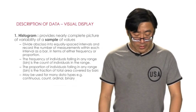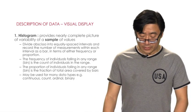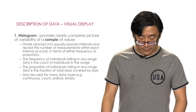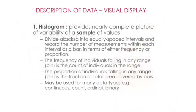Now we will talk about the description of data, starting with visual display. First, we want to talk about the histogram. A histogram provides a nearly complete picture of the variables of a sample of values. It divides the x-axis into equally spaced intervals and records the number of measurements within each interval as a bar, in terms of either frequency or proportion.